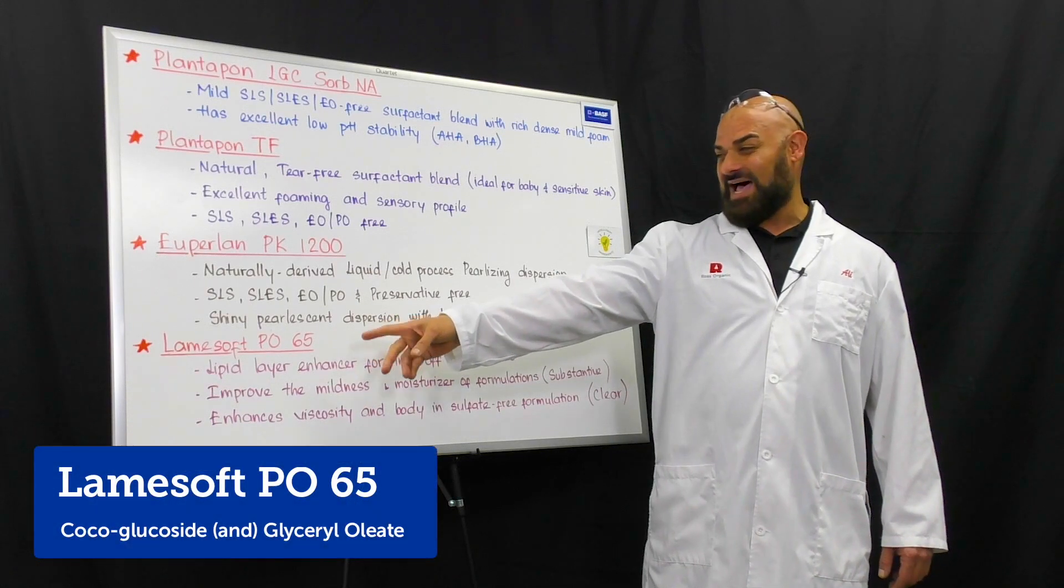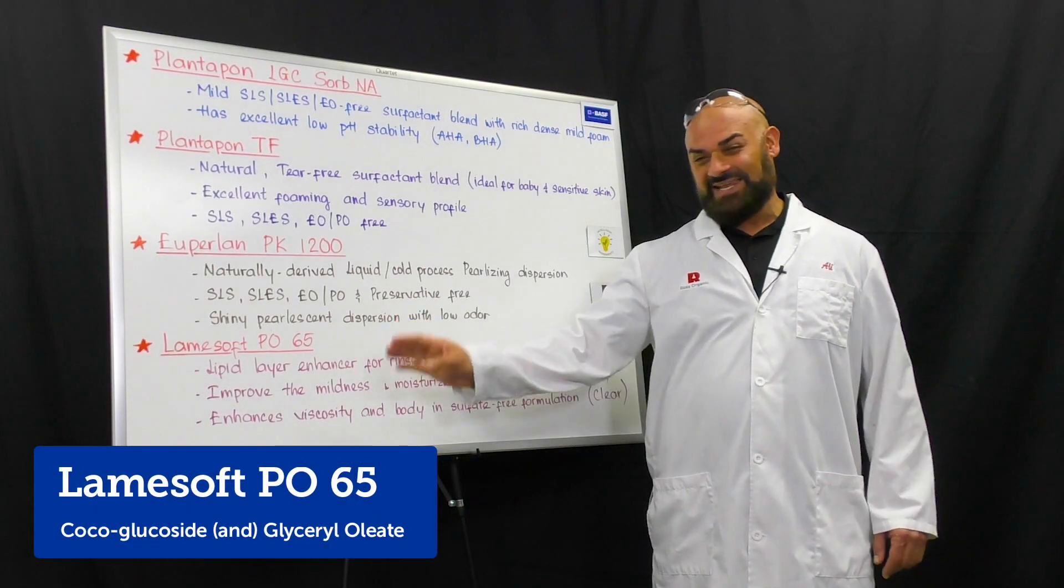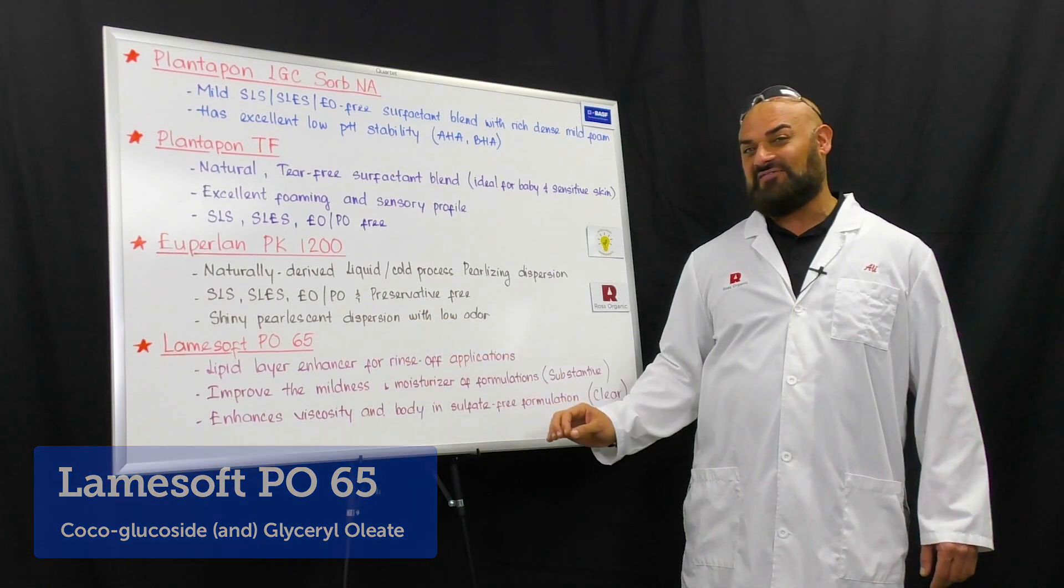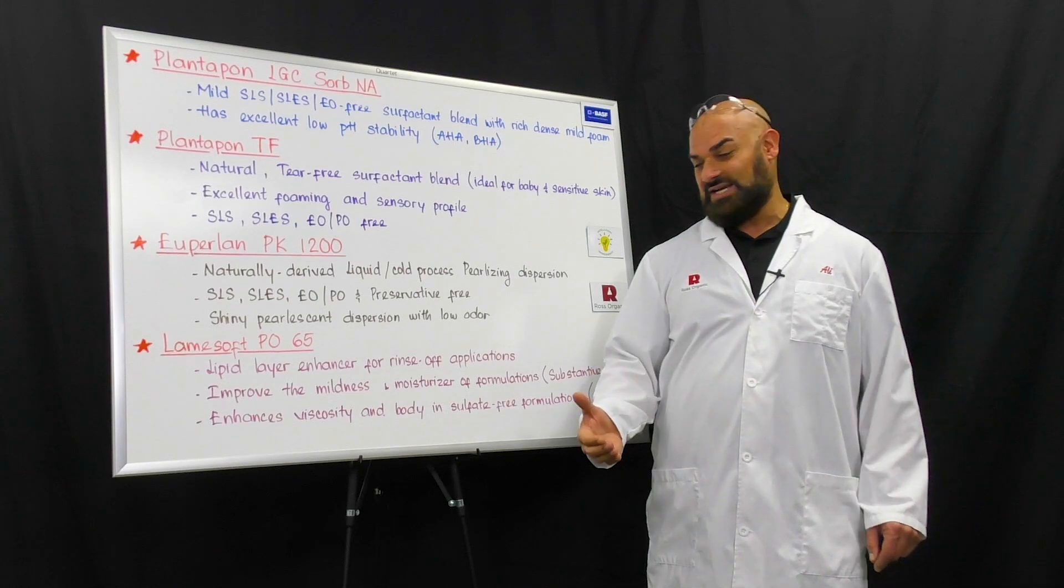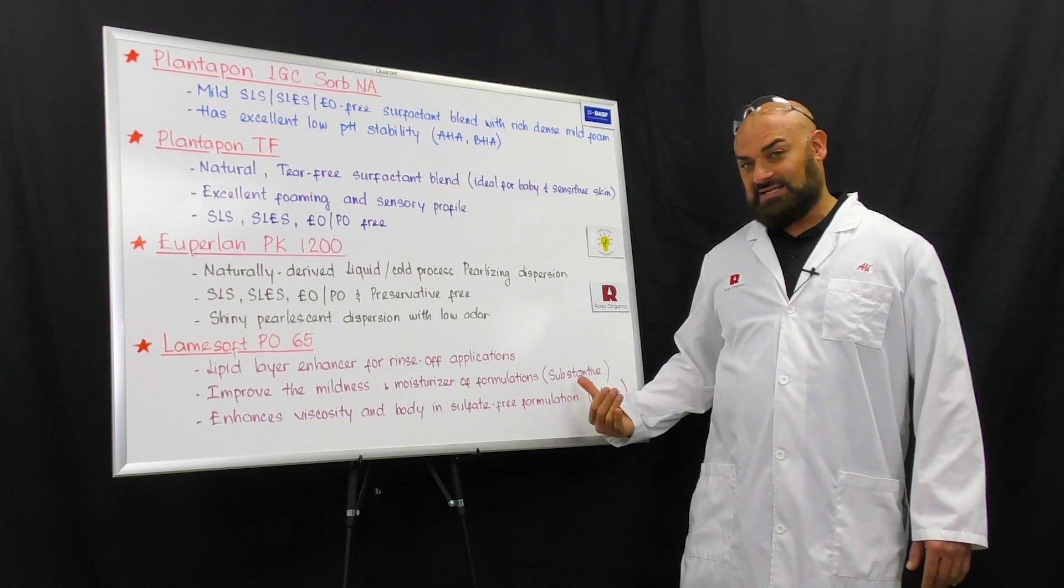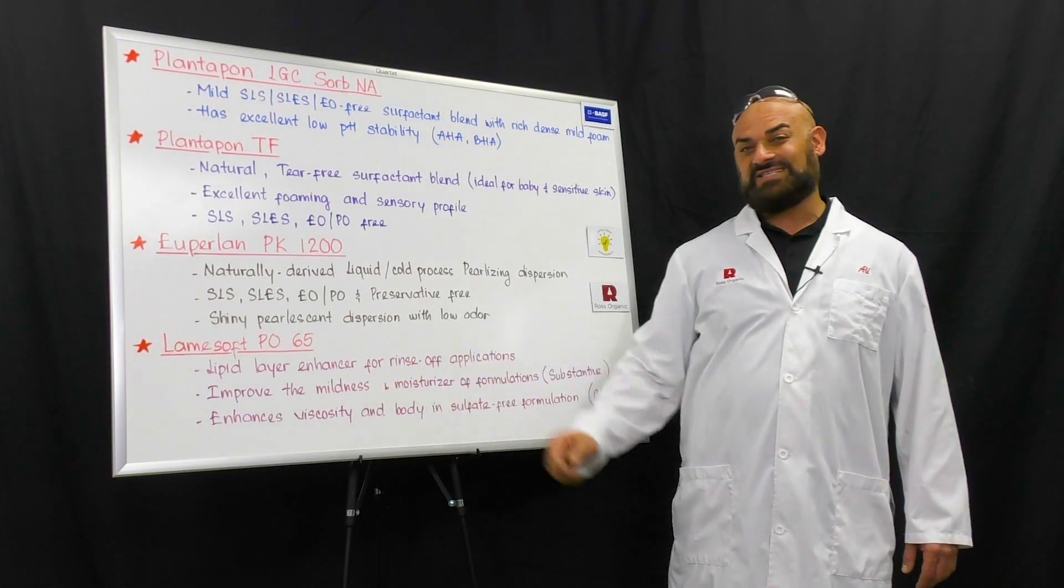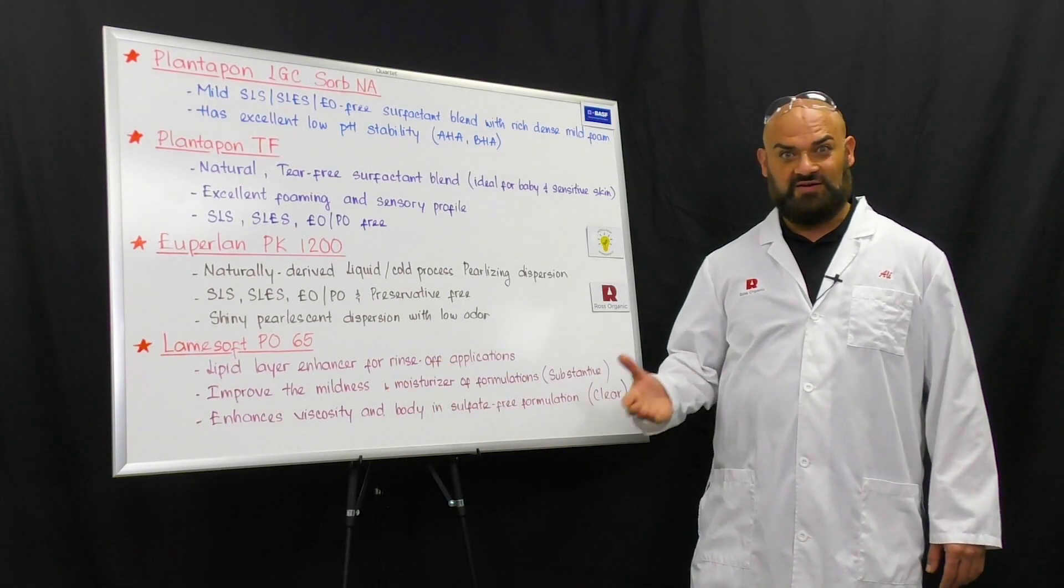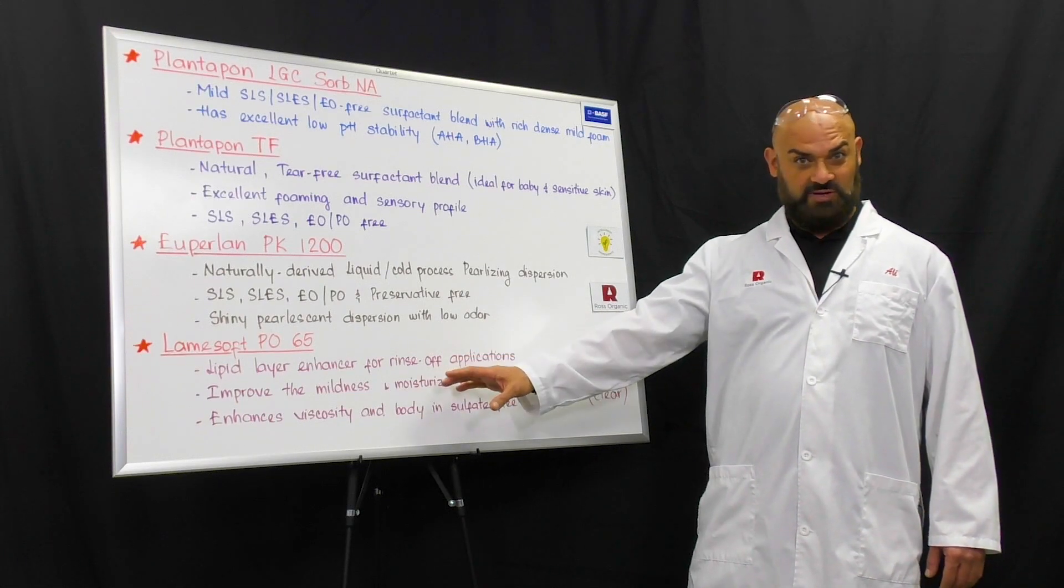Last but not least is the LimeSoft PO65, one of my favorite ingredients. This is a lipid layer enhancer for rinse-off applications. It improves the mildness and moisturization of formulations because it's very substantive to skin and hair. And it also enhances the viscosity and the body of sulfate-free formulations. And this one does yield clear formulations.